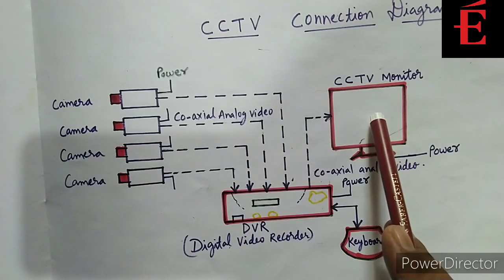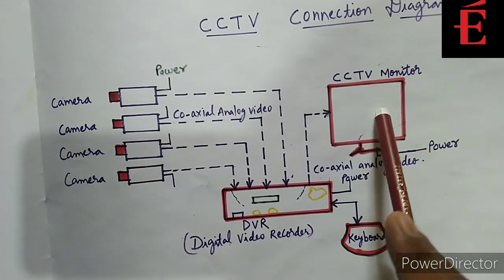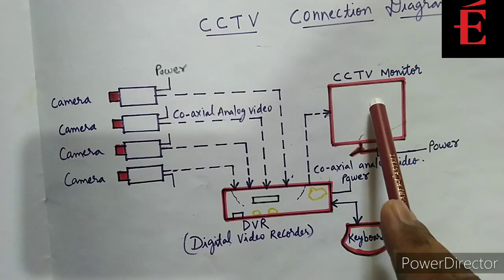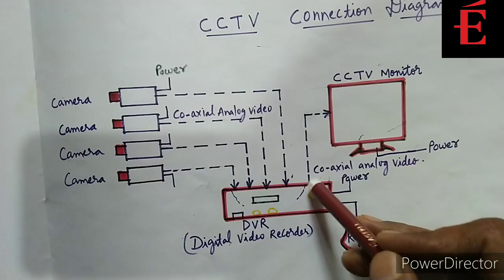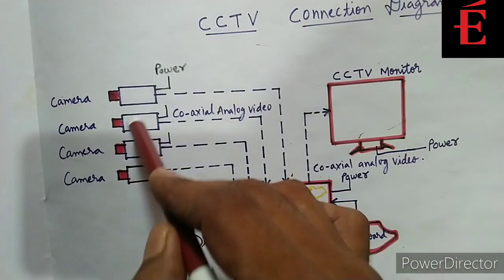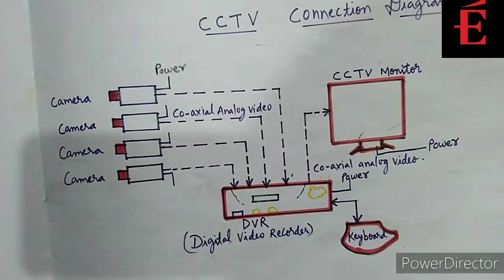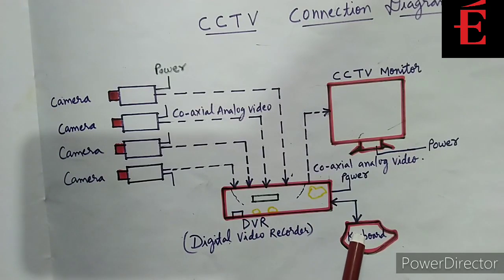Here you can see the monitor where we will see and monitor the recording. Connect the monitor — which may be a TV or computer — to the video output connection in the DVR. Here there is a video output connection. This is the symbol for DVR, and this is the symbol for CCTV cameras. You can also connect speakers for audio output to the DVR, and I have connected a keyboard as well.